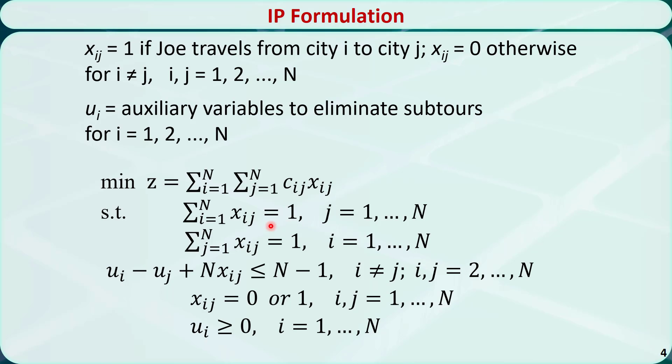The first constraint ensures that we must arrive at a city just once. The second constraint ensures that we must leave a city just once.